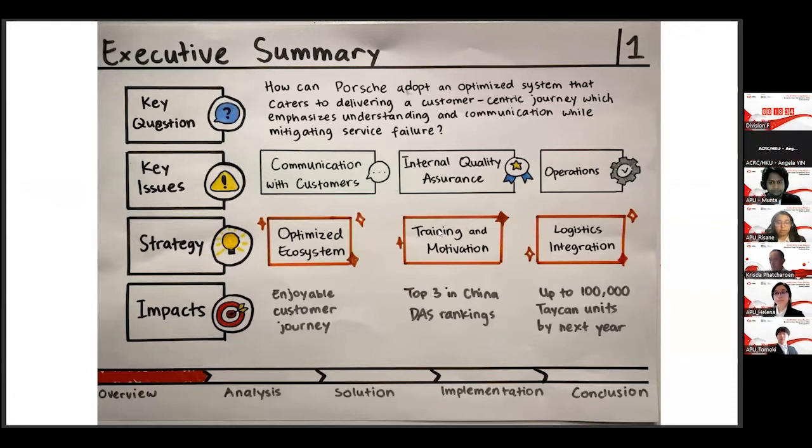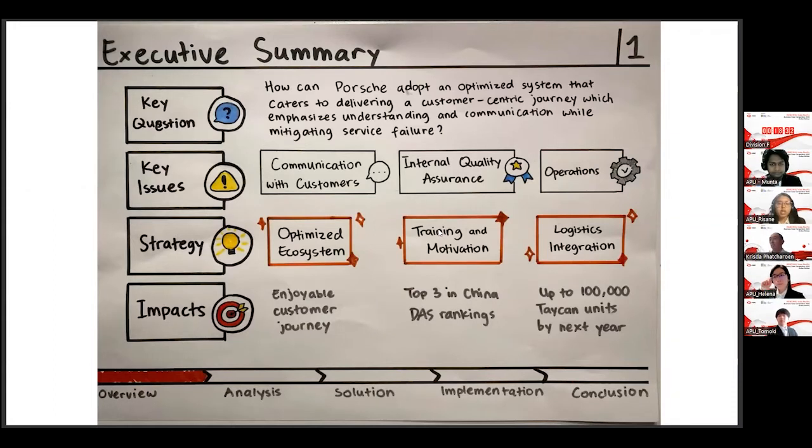We have thought further, and we have come up with three key issues, which involve communication with customers, internal quality assurance, and operational efficiency, which will be catered to with three strategies, and then the resultant impact would lead to enjoyable customer journey, higher rankings in the China DAS rankings, and upscaled deliveries of the Taycan.